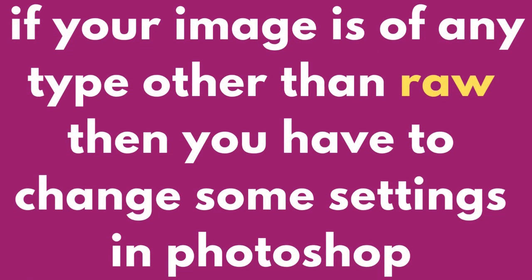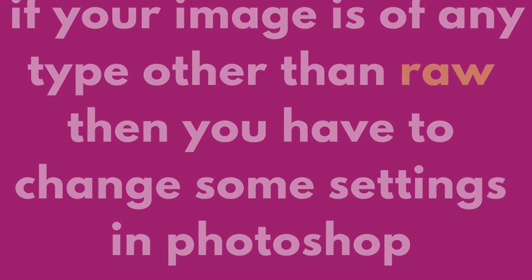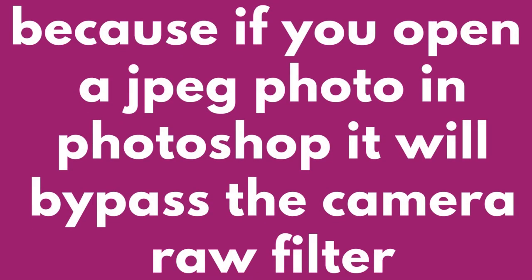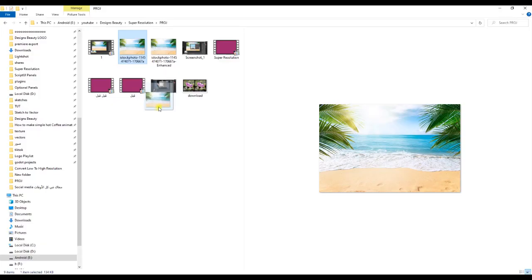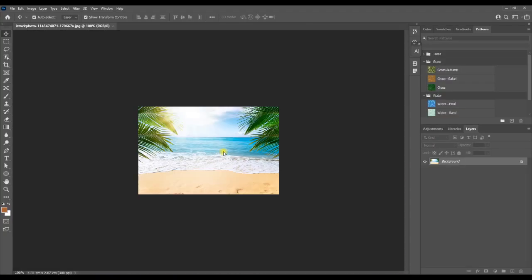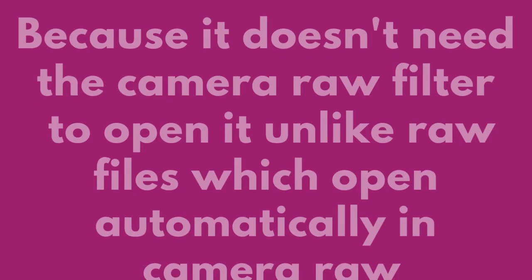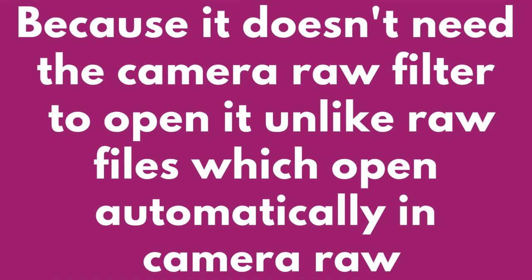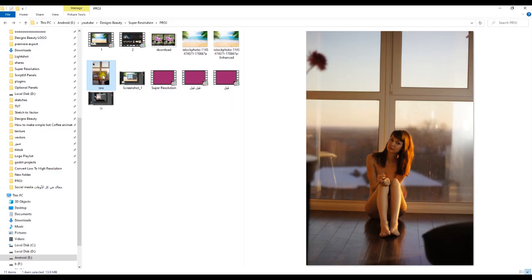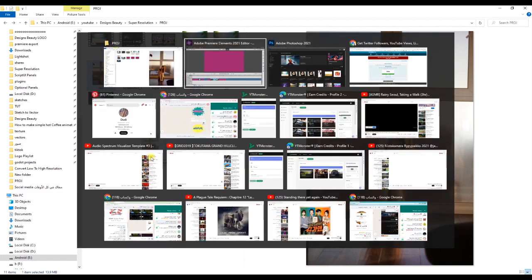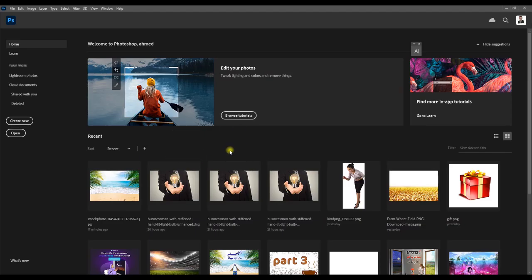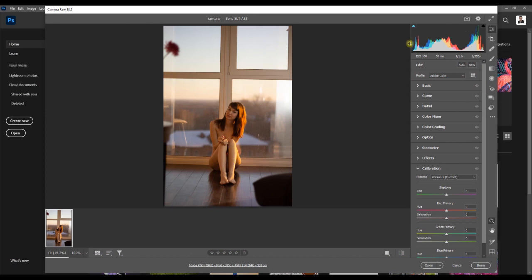If your image is of any type other than raw, then you have to change some settings in Photoshop. Because if you open a JPEG photo in Photoshop, it will bypass the Camera Raw filter by default, since it doesn't need the Camera Raw filter to open it — unlike raw files, which open automatically in the Camera Raw filter by default.